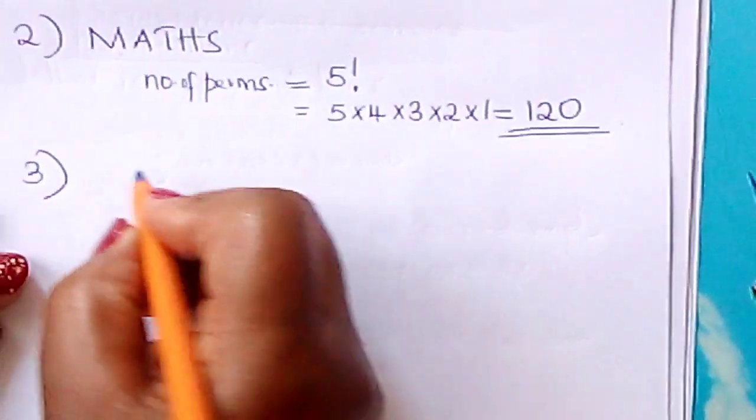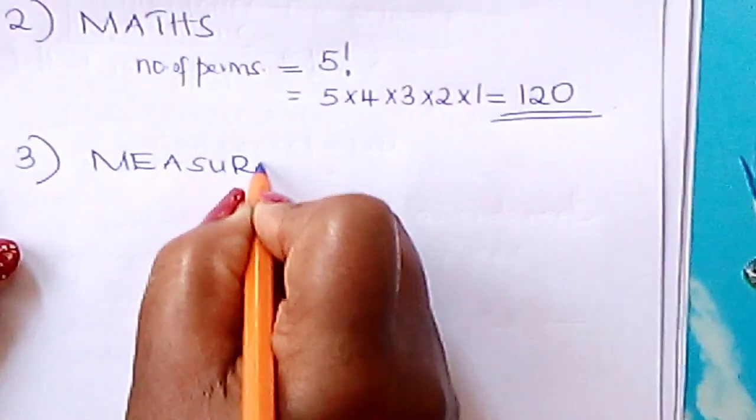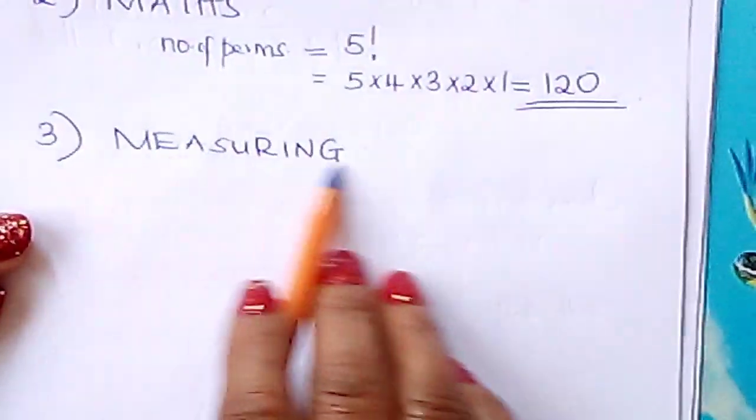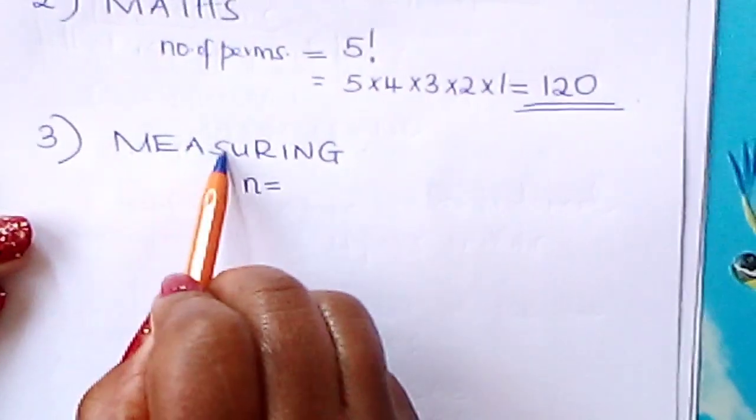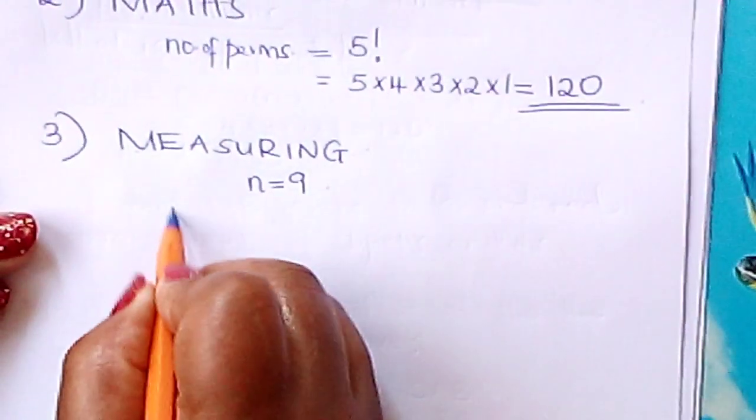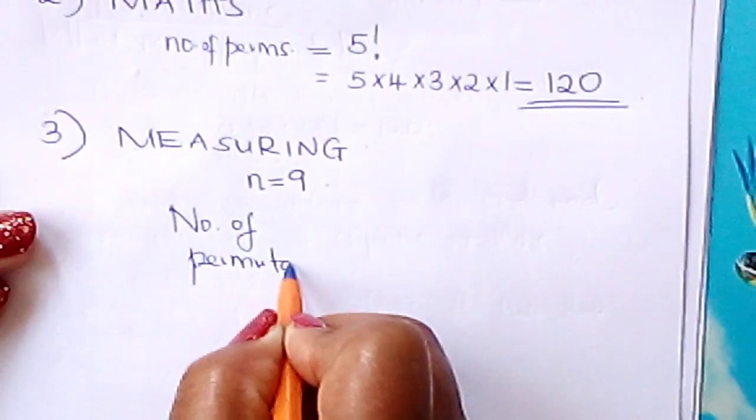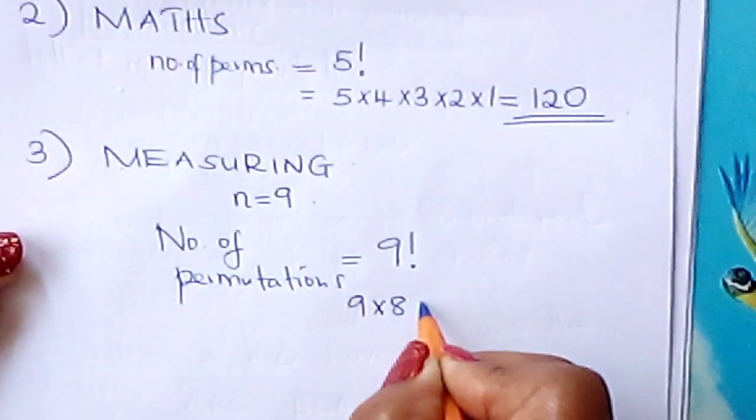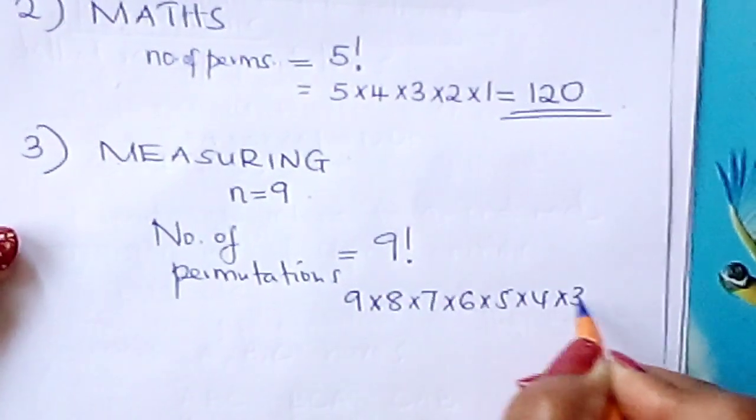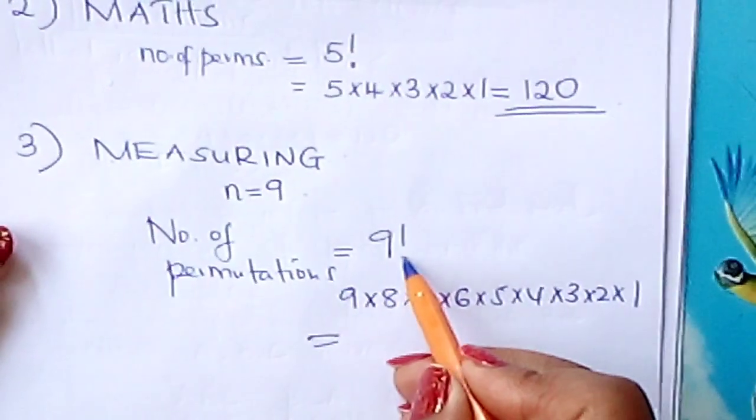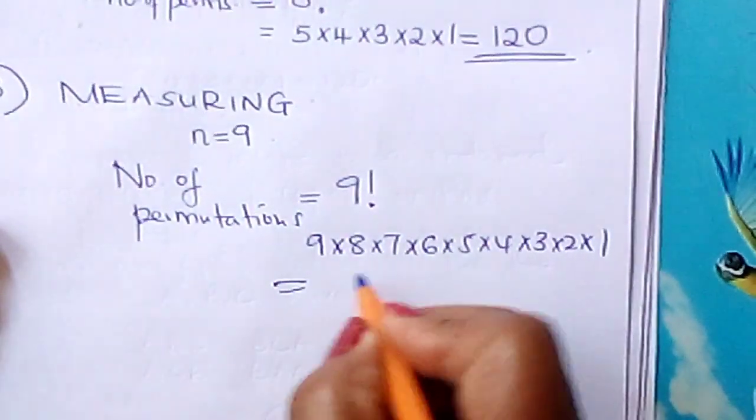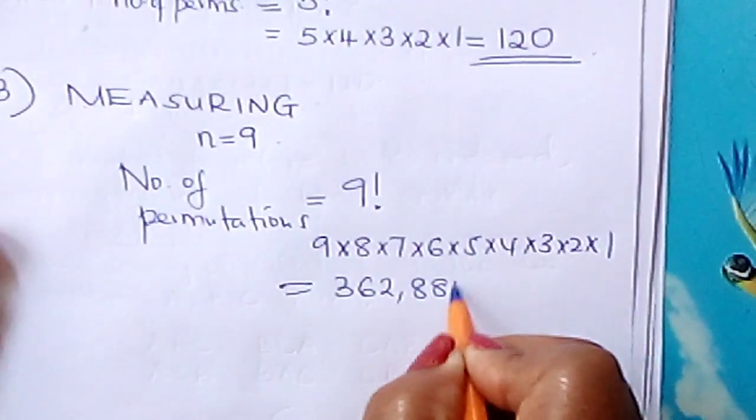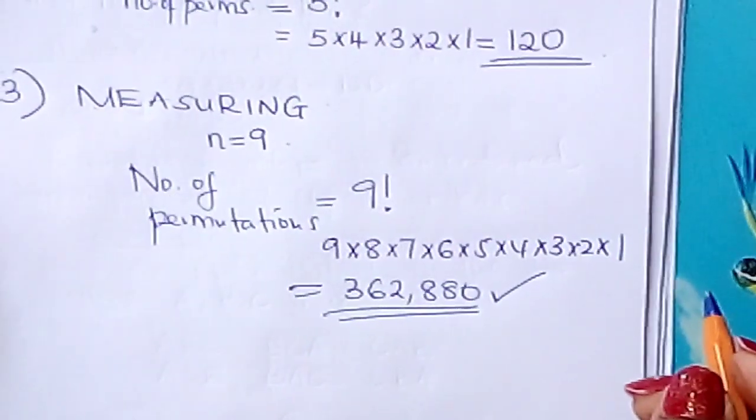Number 3. If you have the word MEASURING, all these letters are different. 1, 2, 3, 4, 5, 6, 7, 8, 9. All the objects are different. So your n is 9. Therefore, in this case, the number of permutations, just like we've done above, would be equal to n factorial, which is 9 factorial. 9 factorial is 9 times 8 times 7 times 6 times 5 times 4 times 3 times 2 times 1, or you can simply use a calculator. 9 factorial using a calculator would give you 362,880 permutations. Believe it or not, it's quite interesting and unbelievable.